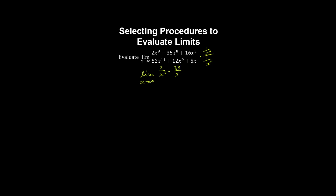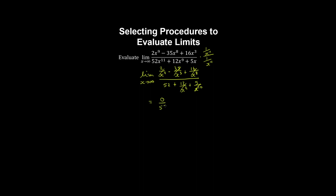Let's evaluate this one-sided limit as x goes to infinity. Here we can multiply by the reciprocal of the fastest growing term to get an equivalent algebraic expression. Multiplying each term by this reciprocal, we obtain the following limit. Now we can apply the quotient limit theorem and the sum and difference theorems to evaluate the limit of each of these terms individually. So as x goes to infinity, these terms all go to zero, and therefore we're left with zero on 52, which is zero.